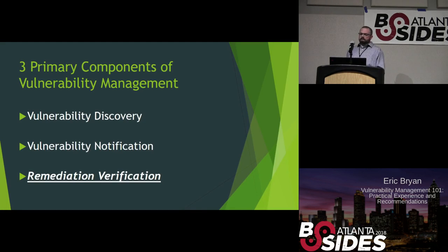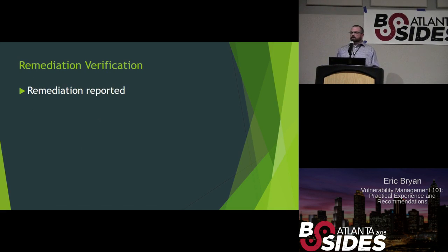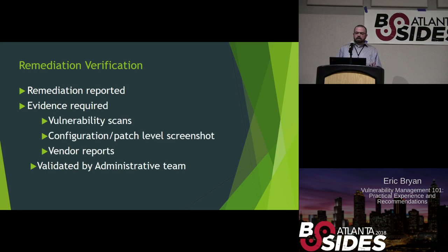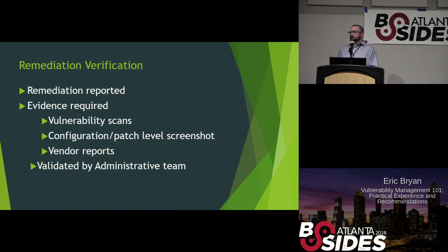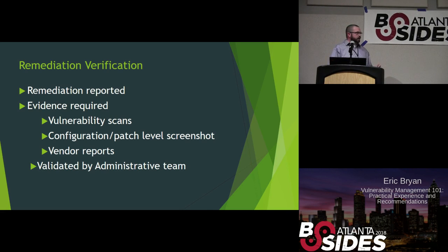Now let's talk about remediation verification — the third and final component — ensuring that remediation is complete. We discovered a vulnerability, and remediation has been reported by the administrative team. In these cases, it's up to the security team to obtain evidence. If you found the vulnerability with a vulnerability scan, you can just rerun the scan once they say they fixed it. If it was discovered outside your vulnerability scanner, you can use patch level screenshots, vendor reports such as Microsoft Baseline Security Analyzer, or tools like F5's configuration export, which will output all missing patches and configuration details.